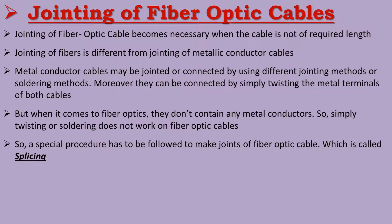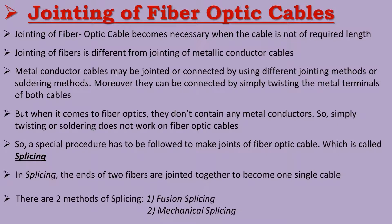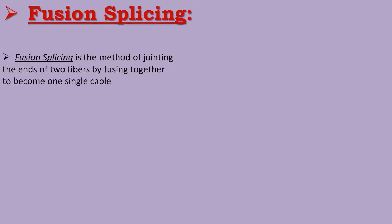Splicing of fiber optic cables means jointing of fiber optic cables. In splicing, the ends of two fibers are jointed together to become one single cable. There are two methods of splicing: fusion splicing and mechanical splicing. Fusion splicing is the method of jointing the ends of two fibers by fusing them together to become one single cable.